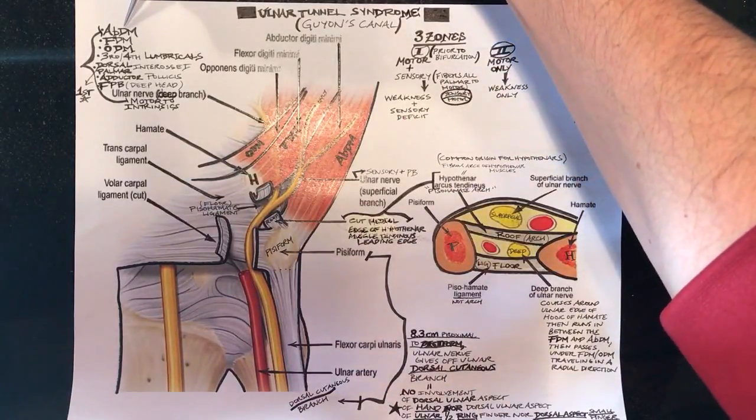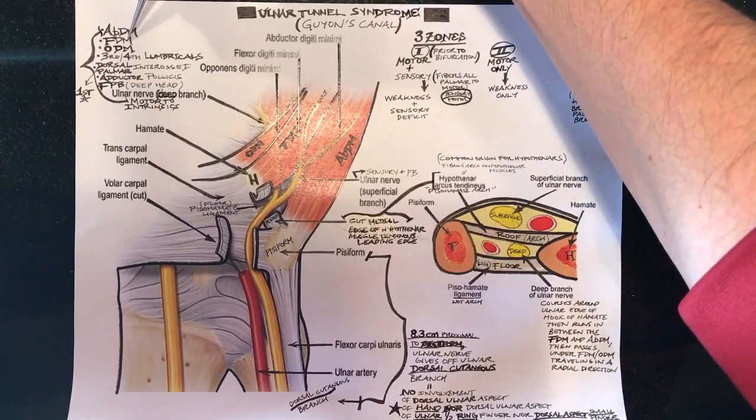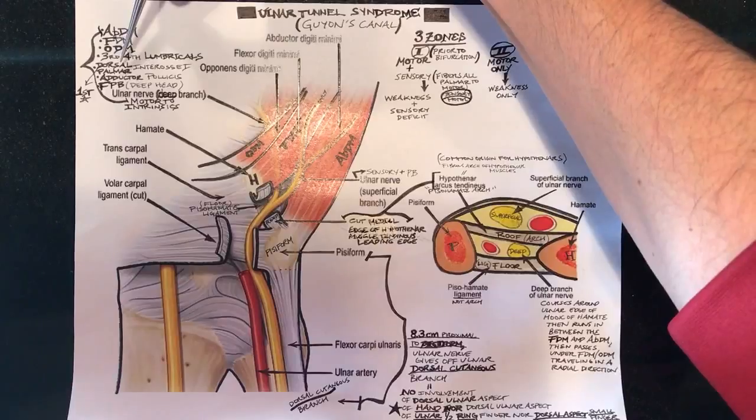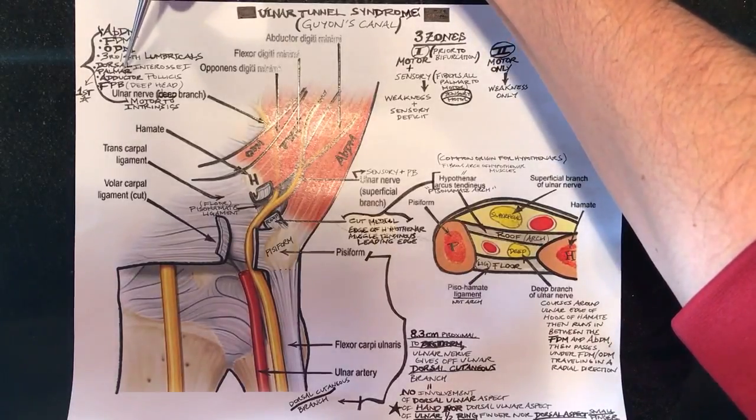That includes the abductor digiti minimi, the flexor digiti minimi, opponens digiti minimi, the third and fourth lumbrical muscles, both dorsal and palmar interossei.